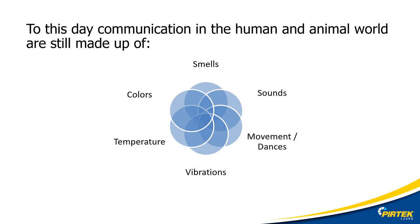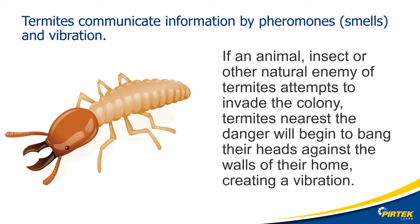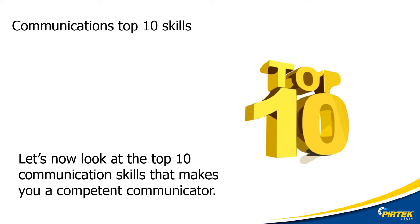Over 90% of our communication is nonverbal. Smells, sounds, dances, vibrations, temperatures, colours — all make up forms of communication. For example, birds build impressive nests or have very colourful feathers to attract a potential mate. Humans do the same thing — we have sports cars and brightly coloured clothing to attract the opposite sex. Termites communicate through vibrations; when a predator approaches their nest, soldier termites bang their heads against objects to create vibrations and warn the rest of the colony.